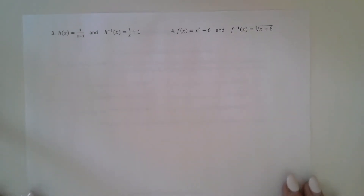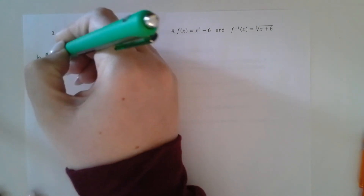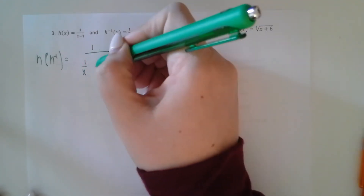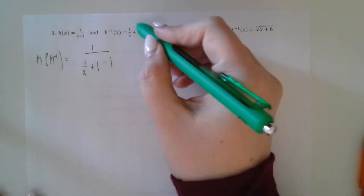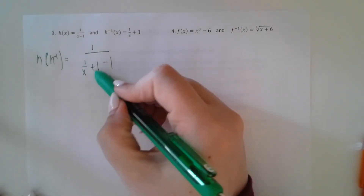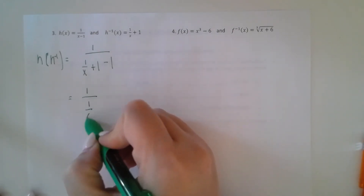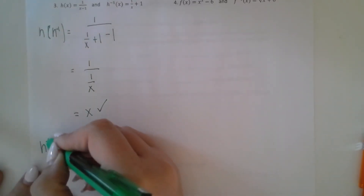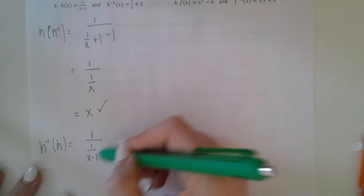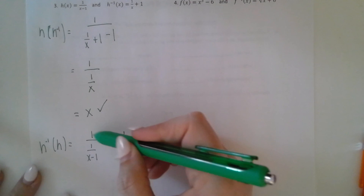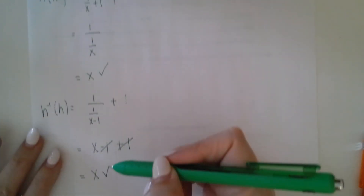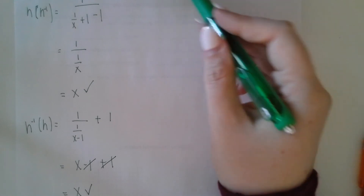For example 3, we first do h of h inverse. So 1 over 1 over x plus 1, then minus 1 — the minus 1 plus 1 cancels, giving us 1 over 1 over x, and multiplying by the reciprocal we just get x. Now h inverse of h: 1 over x plus 1 — multiplying by the reciprocal gives x minus 1 plus 1, and the minus 1 and plus 1 cancel, giving just x. Try example 4 on your own and check your answers on the answer key.